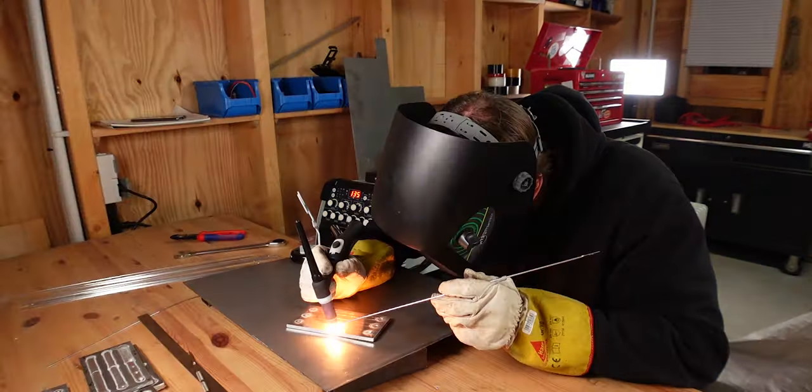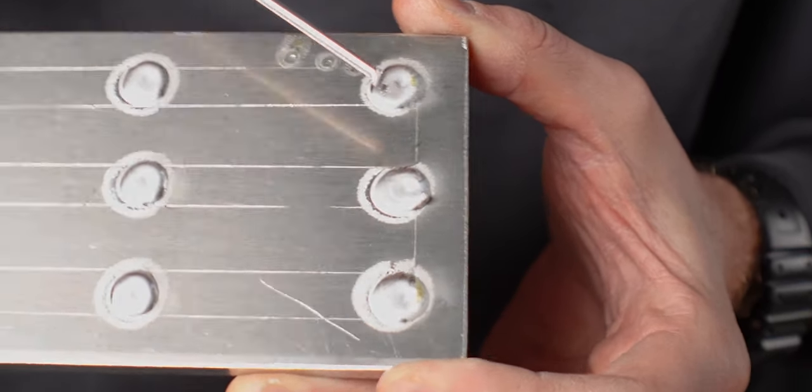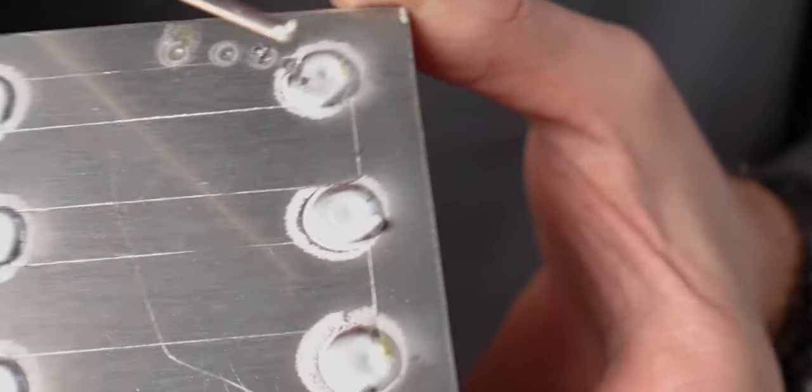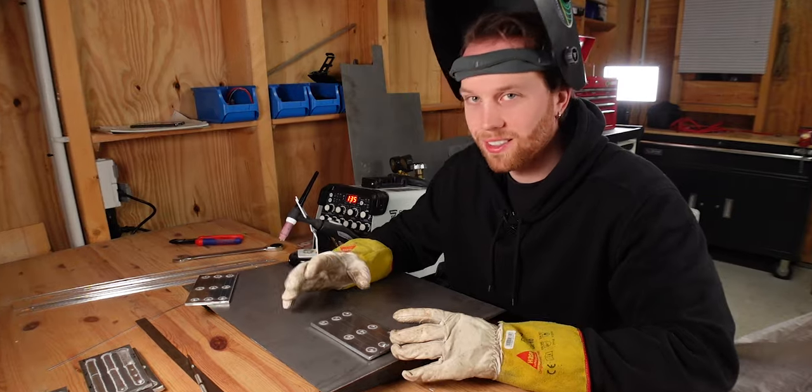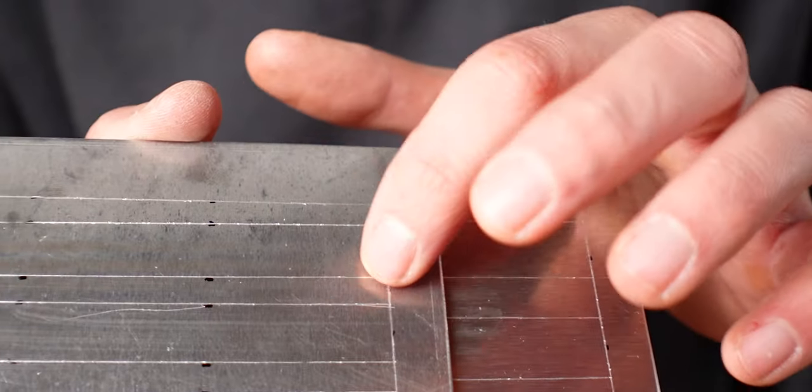What sometimes happens is that the filler rod makes these little strings where it doesn't really make a nice drop into the puddle. So I quickly prepare a few more plates. Quickly - it takes quite a while. I've now marked smaller guidelines on the thinner plates. I hope that makes a difference.